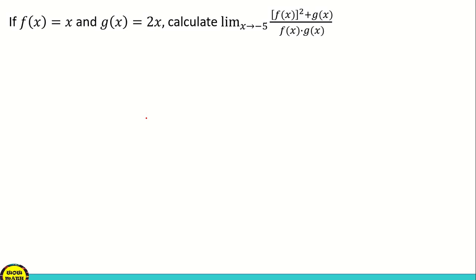So we're going to solve this limits of function. If f of x is equal to x and g of x is equal to 2x, calculate the limit of the square of f of x plus g of x, all over f of x times g of x, as x approaches negative 5. We're going to apply the limit theorem.